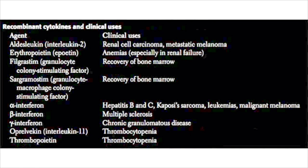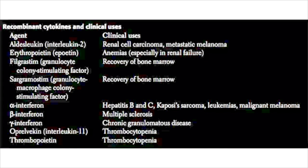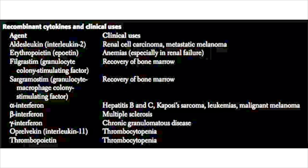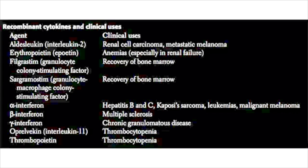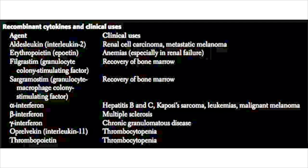There are also a number of recombinant cytokines produced synthetically in the laboratory, used for a variety of clinical reasons. The first is aldesleukin, which is a recombinant interleukin-2 (IL-2). Aldesleukin is generally used for renal cell carcinoma as well as metastatic melanoma.